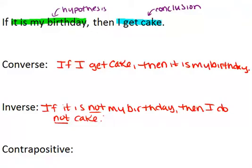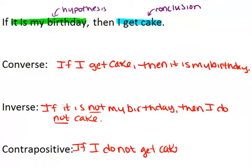The final sentence we can create based on these original two parts — 'it is my birthday' and 'I get cake' — is called the contrapositive. The contrapositive is basically a combination of both the converse and the inverse. So what you do is negate both parts of the sentence and also switch them. So it would be: if I do not get cake, then it is not my birthday.